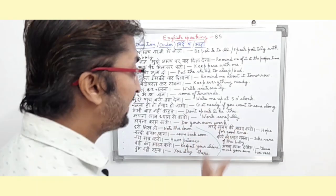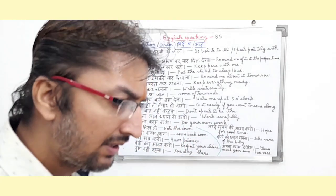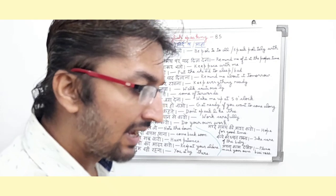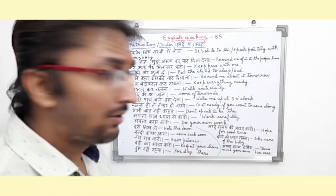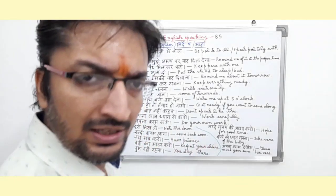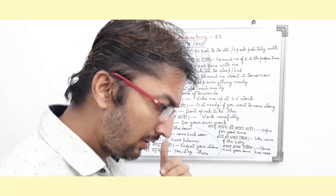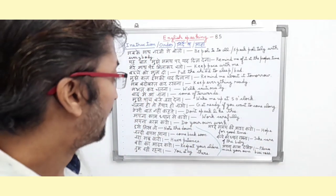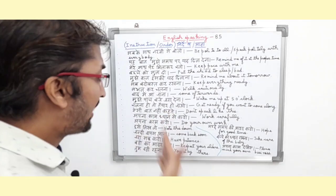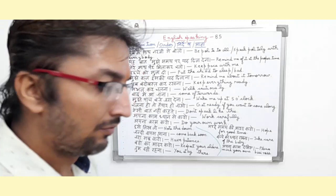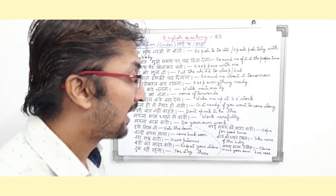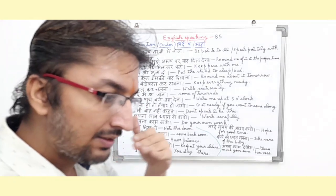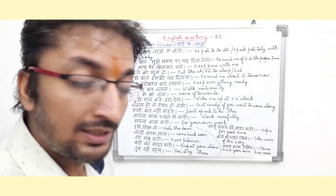In English it means 'don't speak like this.' The sentence basically means that the person is suggesting or ordering another person not to speak in that manner. It is an order and command type sentence.